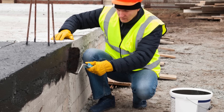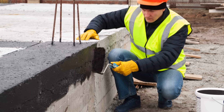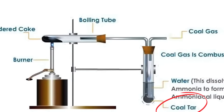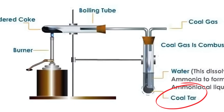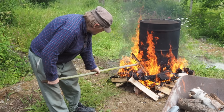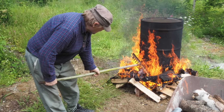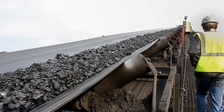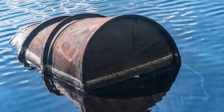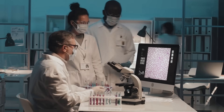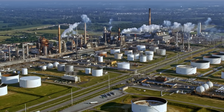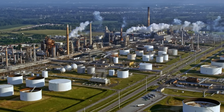Tar is a complex and versatile substance that has been used for centuries in various industries. Whether derived from wood, coal, or petroleum, the process of making tar involves heating organic material to extract valuable components. While traditional methods such as wood distillation were used for waterproofing and shipbuilding, modern industrial processes have made tar an essential material for infrastructure and manufacturing. However, the environmental impact of tar production has led to new research into sustainable alternatives and cleaner refining techniques. As industries continue to evolve, the role of tar will likely shift toward more environmentally friendly applications.